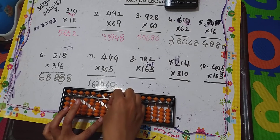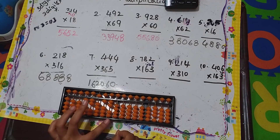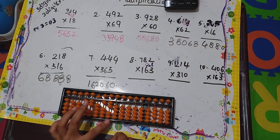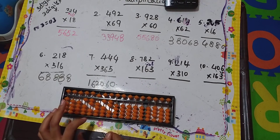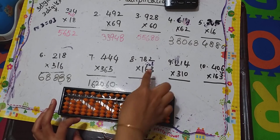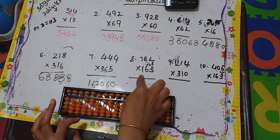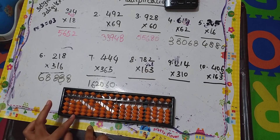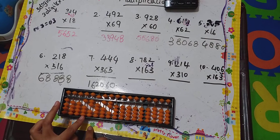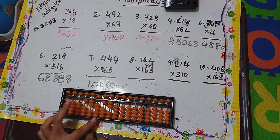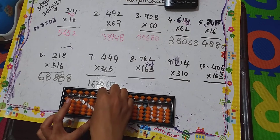Next, 6 twos are 12 — 1, 2, done. We are done with 6. Next we have to go for 3. For 3 you have to leave these two columns, then start from here. 3 sevens are — sorry — 3 sevens are 21, so 2, 1 — twenty-one.